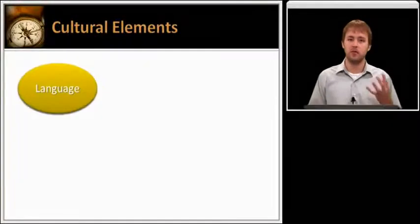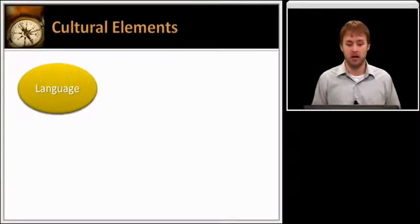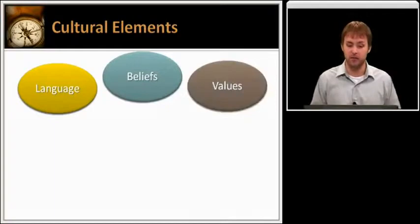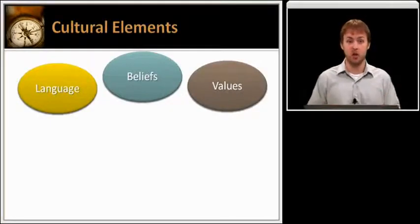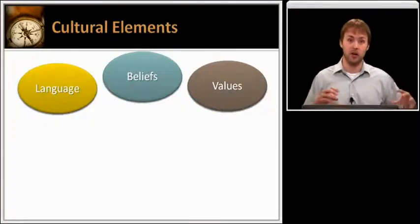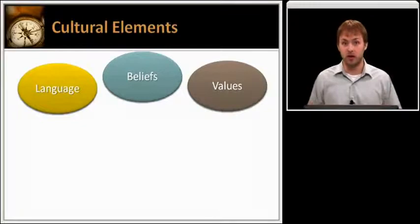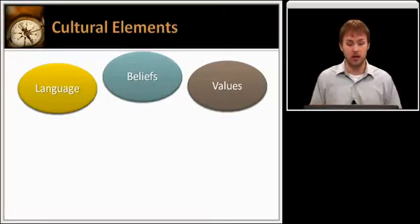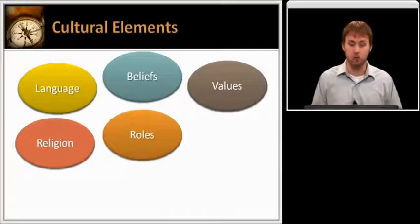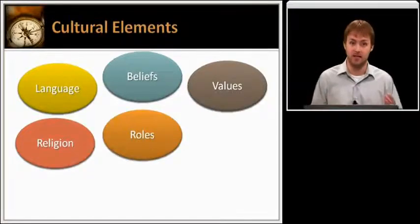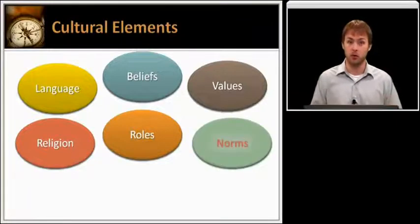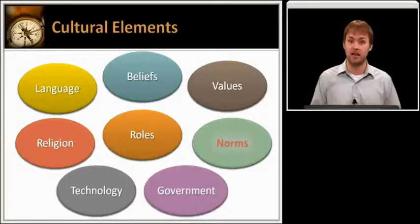Culture involves many elements. We're going to talk about a few here, including language, beliefs, and value systems. In some cultures, for instance, large families are highly valued, so parents are encouraged to have many children — and that's unique to certain cultures. We also have religion, gender roles — the roles that men and women have in that society — social norms, how people interact with each other, as well as technology and types of government.